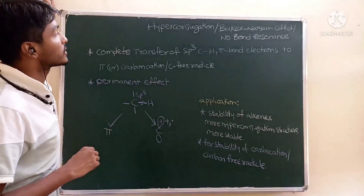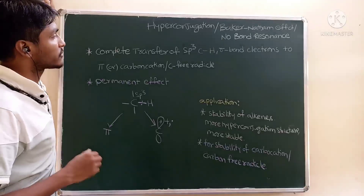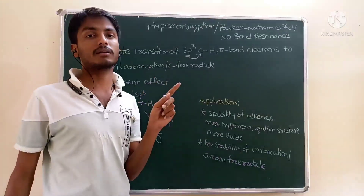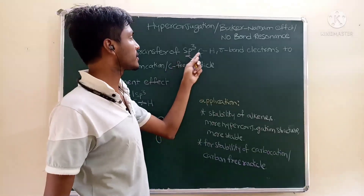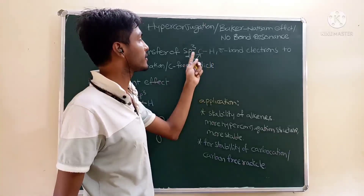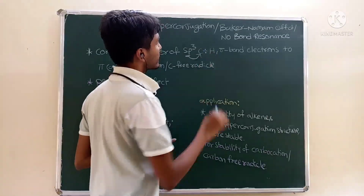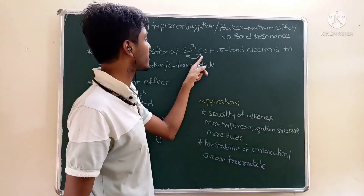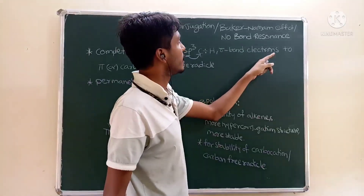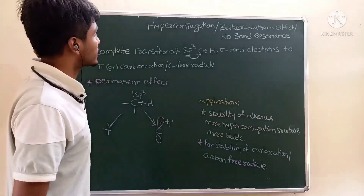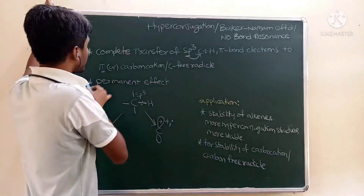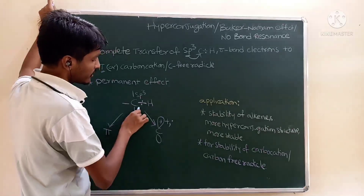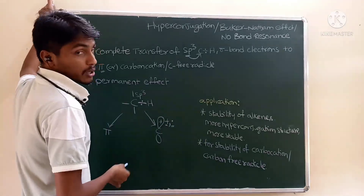So what exactly happens in hyperconjugation? An sp3 hybridized carbon atom bonded with hydrogen contains sigma electrons. The complete transfer of those sigma electrons from the sp3 hybridized carbon-hydrogen bond to the pi system, or to the carbocation, is what defines hyperconjugation.